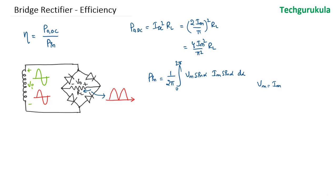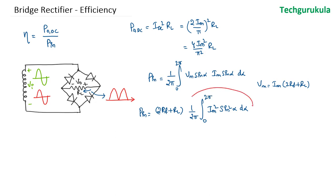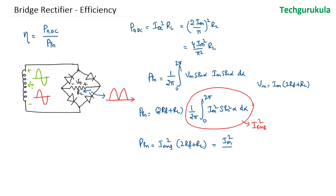We can write Vm equal to Im times (2rf plus RL), so the input power can be written as (2rf plus RL) times 1 over 2pi times the integral of Im squared sin squared alpha d alpha from 0 to 2pi. This integral evaluates to Irms squared, so the input power equals Irms squared times (2rf plus RL). Since Irms equals Im over root 2, this becomes Im squared over 2 times (2rf plus RL).